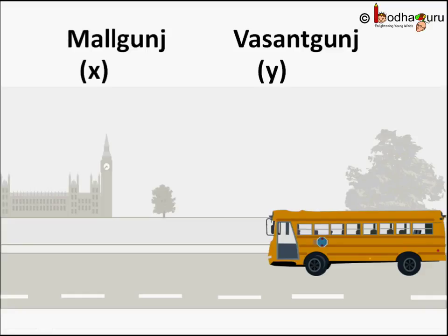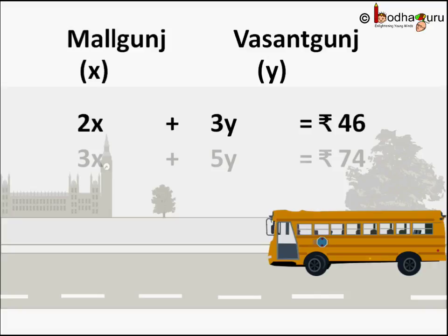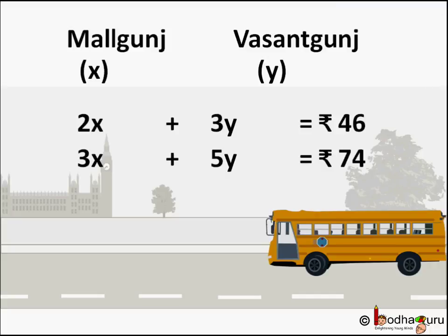Let us find out. Let us say the fare to Maul Ganj is Rs. X and Rs. Y is the fare to Vasanth Ganj. So we can say 2 tickets to Maul Ganj, that is 2X, plus 3 tickets to Vasanth Ganj, that is 3Y, equal to 46. This is the representation of Anand's tickets. Same way, 3X plus 5Y equal to 74, which is what Rajat paid. Now we learned substitution and elimination methods earlier, which try to get the value of one variable and then use it to find the value of the other variable.